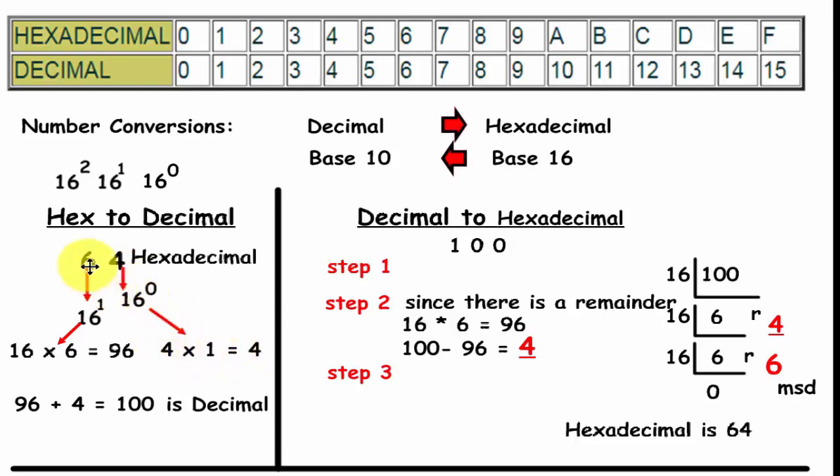This number, the second number is 16 to the first power. So that means this number will multiply 16 by that number. In this example it's 6 times 16 which is equal to 96. Now all you have to do is add these two numbers together. 96 plus 4 equals 100. So that's the decimal equivalent to the number 64.